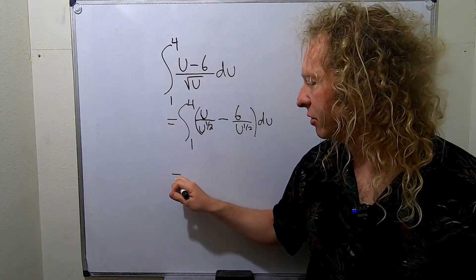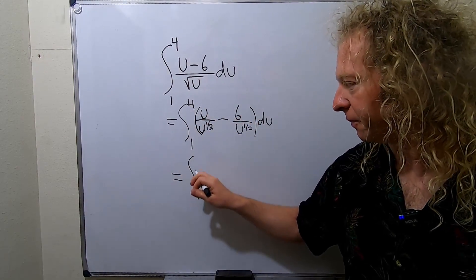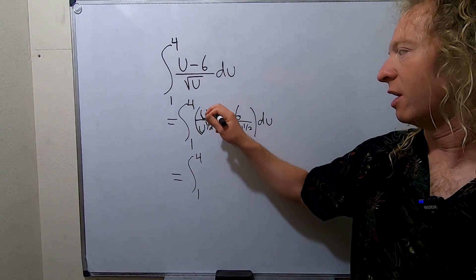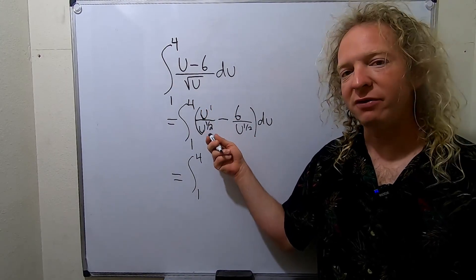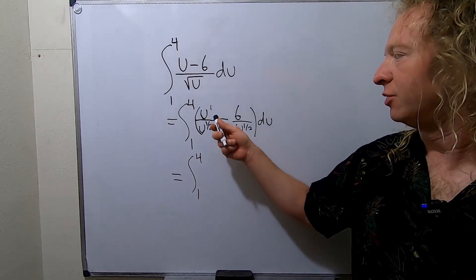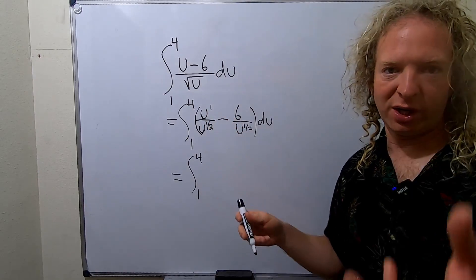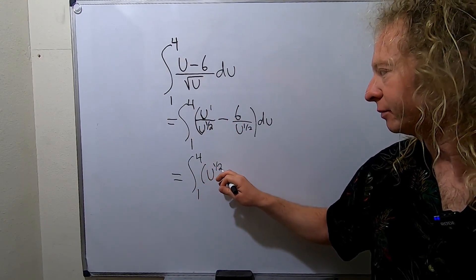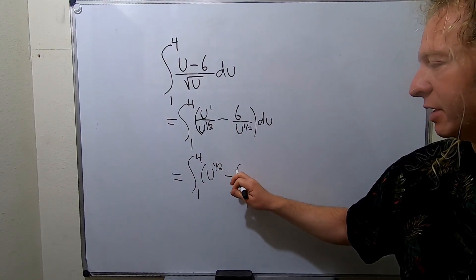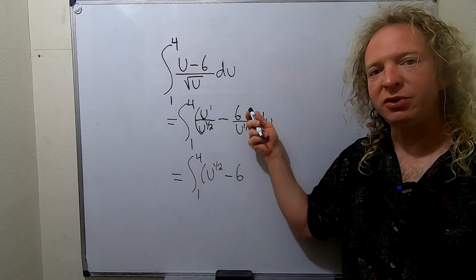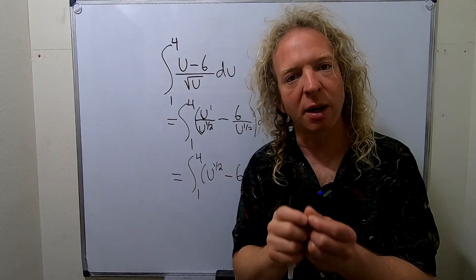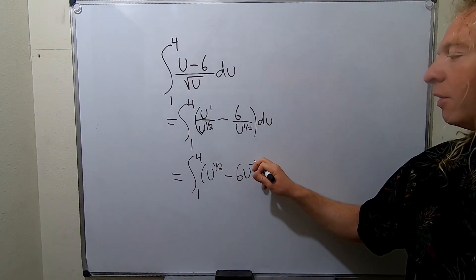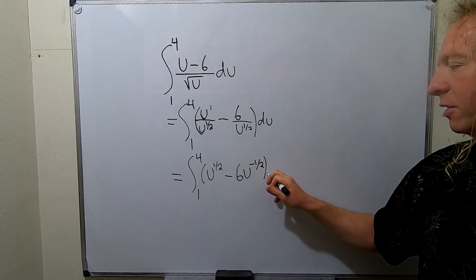Now we can simplify this. We still have the definite integral. What you do here is subtract the exponent. You have u to the first power and u to the 1 half, so you do 1 minus 1 half and get 1 half. So this is u to the 1 half minus 6. Then you can take this and bring it up, and when you bring it up the exponent becomes negative. So this is u to the negative 1 half, and then we have our du.